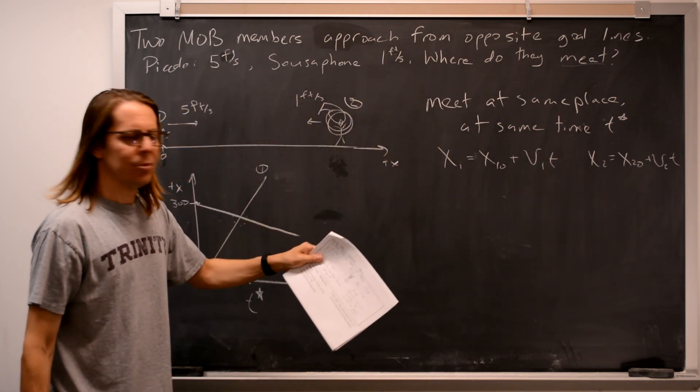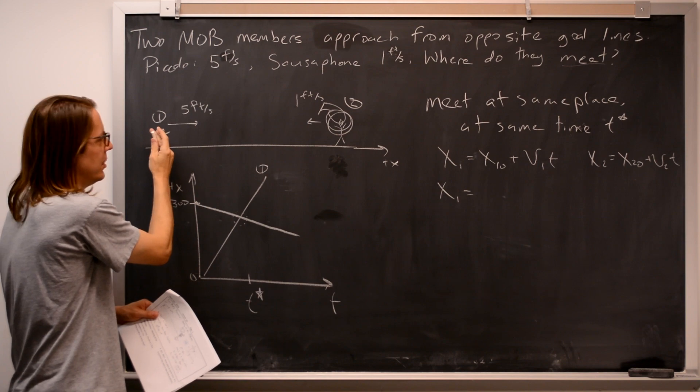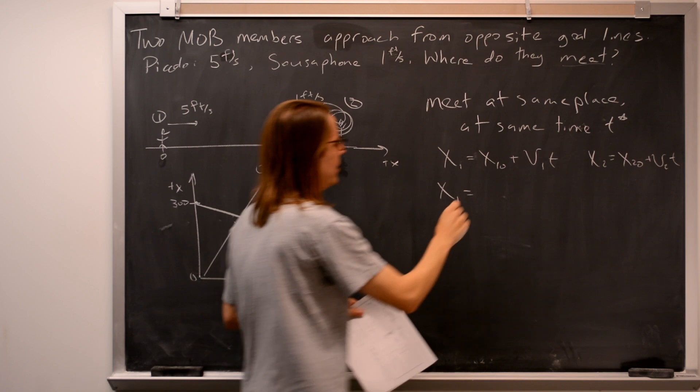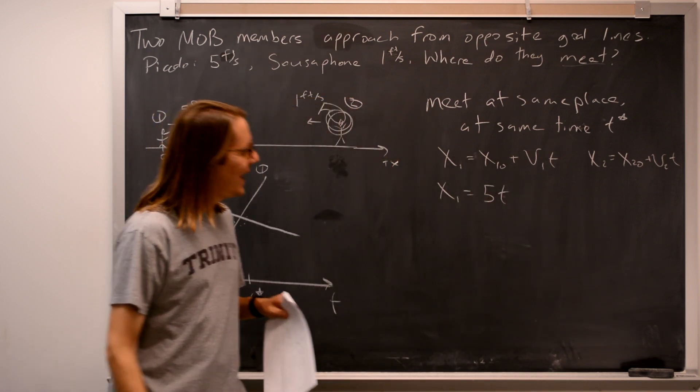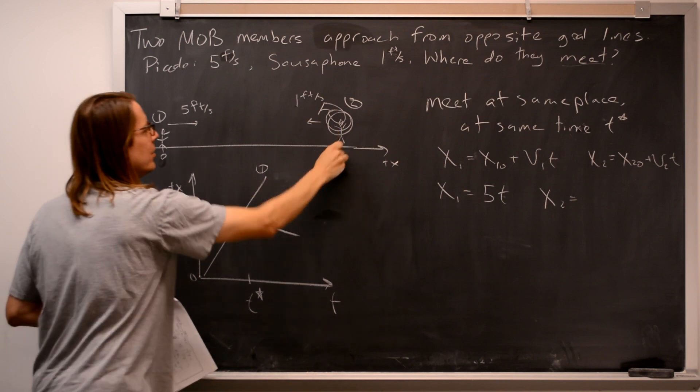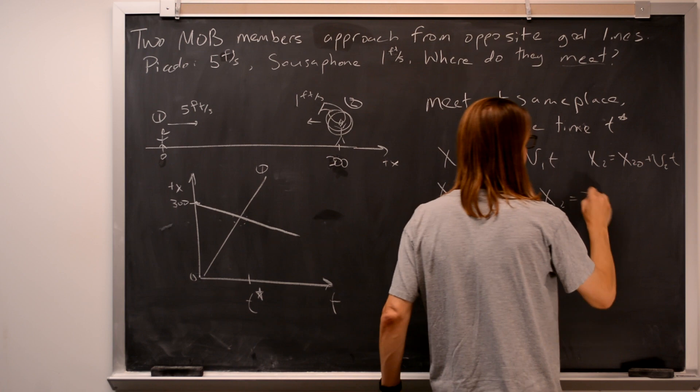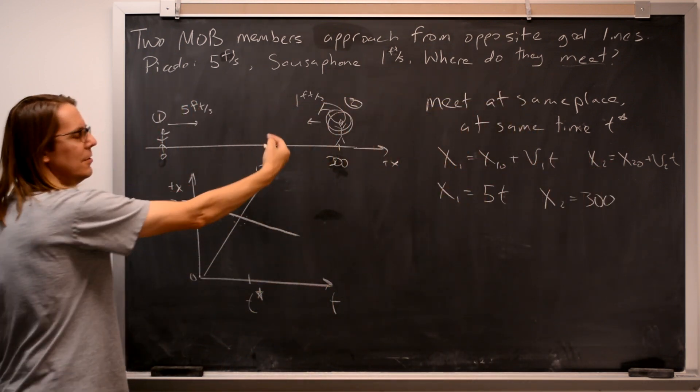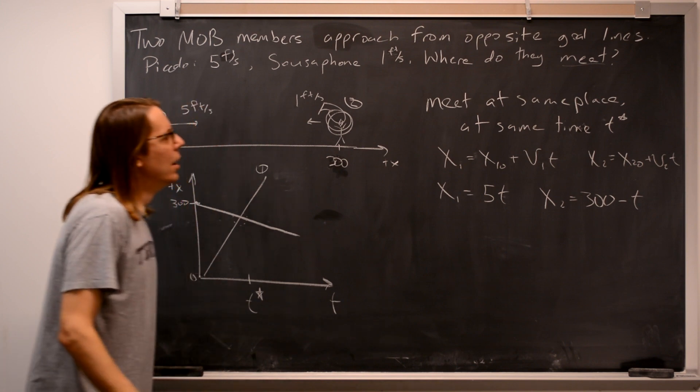So now we can write the little kinematics equation for each of them. So X1 equals X1 naught plus V1 T and X2 equals X2 naught plus V2 T. That's just how they would both move. For now, it's not T star because this is still a function of where they are at any time. Let's put in actual numbers now. So X1 has no initial position. It starts at the origin, the piccolo player. So 0 plus its velocity is 5. So I'll just say 5T. We'll do this in feet and seconds. X2 equals, so they do have an initial position. They're starting out at 300. 300 feet, the length of the football field. So 300 plus V2. Well, this V we said is negative. It's coming the other way. Okay, so minus 1 times T minus T.